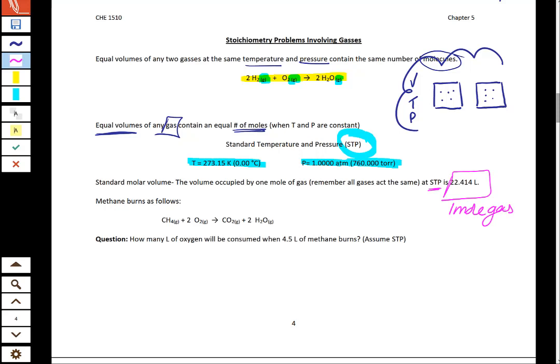Let's see how we can use this as a conversion factor in some stoichiometry problems. So down here, we've got a chemical reaction involving methane and oxygen. It's asking us how many liters of oxygen will be consumed if 4.5 liters of methane burns. Methane is CH4, and we're given 4.5 liters to start with.